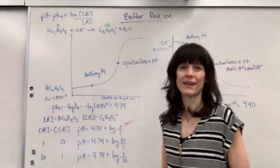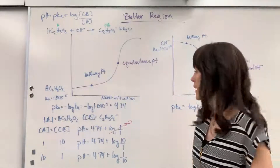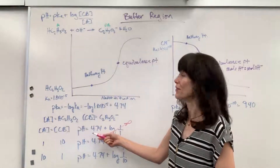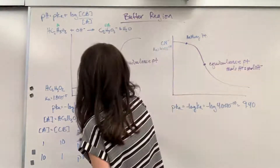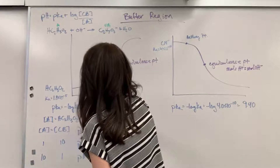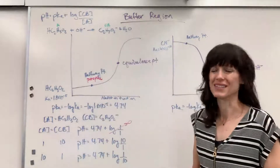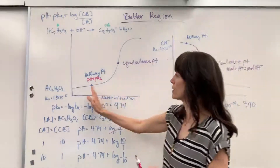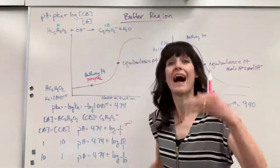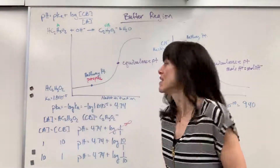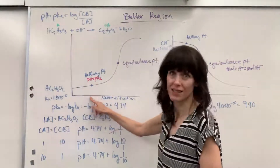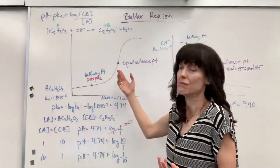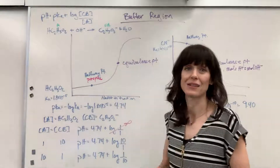Log of 1 is 0, so pH equals 4.74. Here at the halfway point, pH equals pKa — that's very, very special. Another thing to remember: when pH equals pKa at the halfway point, we're halfway through the titration. If it took 10 mL to get here, just double it — it'll be 20 mL to reach the equivalence point.